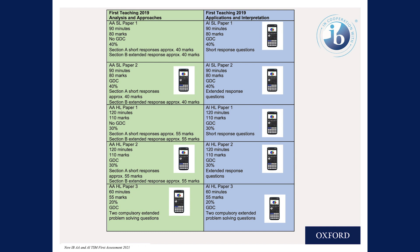You can see that for analysis and approaches, paper one for SL and HL, there is no GDC required. However, for applications and interpretations, we really want to encourage the use of technology and GDC — the GDC is required for all three papers. Another interesting thing in the assessment overview is that at higher level, for both pathways, there is a paper three.